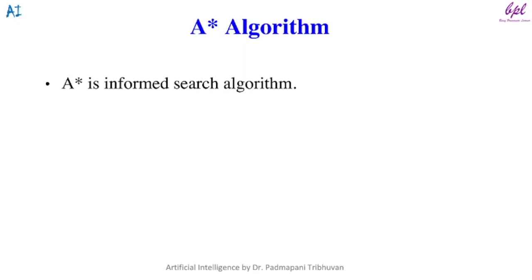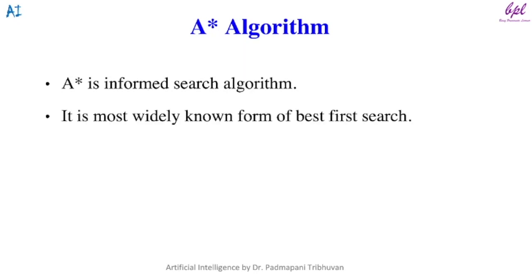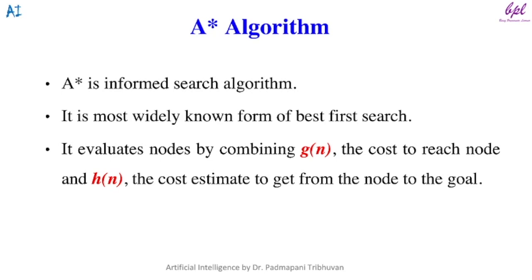A* algorithm is an informed search algorithm. It is the most widely known form of best-first search. As A* algorithm is a form of best-first search, it uses evaluation function f(n). It evaluates a node by combining g(n) and h(n). g(n) is the path cost to reach node n from the initial node, and h(n) is the cost estimate to get from node n to the goal node. f(n) equals g(n) plus h(n).